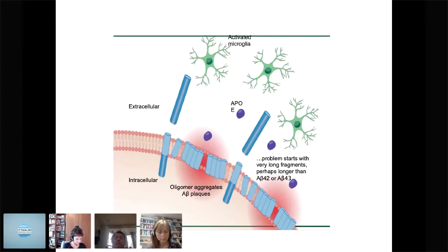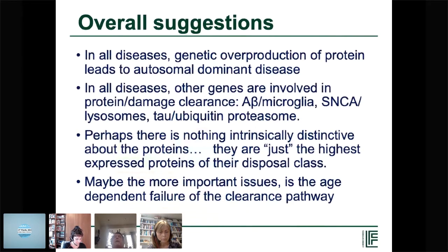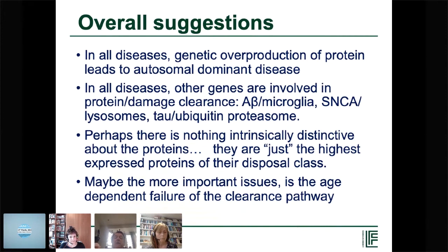In all diseases — this includes Parkinson's and the tangle diseases — overproduction of the protein leads to the dominant disease. In all diseases, part of the risk is a failure to clear. With amyloid, it's microglia. With synuclein, it's largely lysosomes. And with tau, it's largely the proteasome. Maybe there's nothing distinctive about these proteins — just as Vendraskolo said, they are close to their deposition threshold.